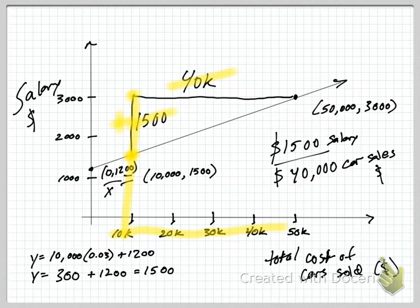Now, if we want to write that out, we would write the run is $1,500 of salary. Sorry, the rise is $1,500 in salary, and the run is 40,000 in car sales.